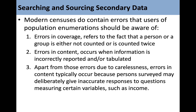Modern censuses do contain errors that users of population enumerations should be aware of. Errors in coverage refers to the fact that a person or group is either not counted or is counted twice. Errors in content occurs when information is incorrectly reported or tabulated — typically because persons surveyed may deliberately give inaccurate responses to questions measuring certain variables such as income.